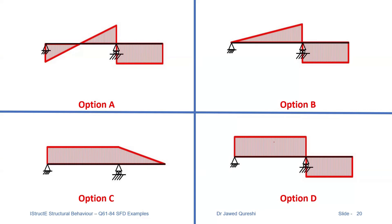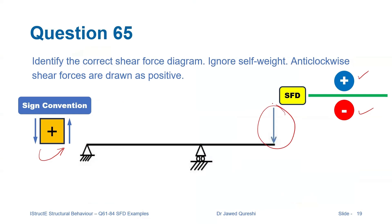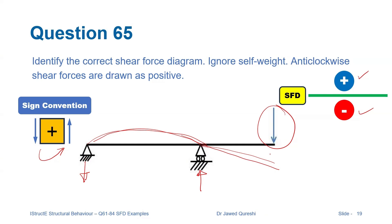You don't actually need any values to validate your shear force diagram. The force is applied at the end of the beam, which will bring it down — so the deflected shape will curve downward. This gives an upward reaction at the pin and a downward reaction at the other support. Since there is no UDL, the diagram will consist of straight lines only; any inclined line indicates an incorrect option.